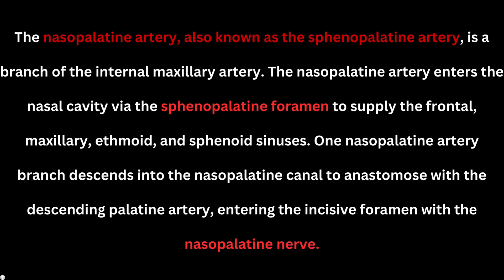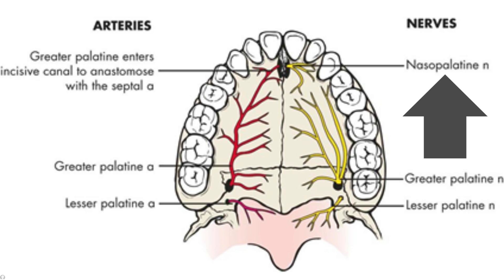The nasopalatine artery enters the nasal cavity via the sphenopalatine foramen — similar to the nasopalatine nerve — in order to supply the frontal, maxillary, ethmoidal, and sphenoidal sinuses, which are the paranasal sinuses. One branch of the nasopalatine artery descends into the nasopalatine canal to anastomose with the descending palatine artery, entering the incisive foramen together with the nasopalatine nerve. In simple terms, the nasopalatine artery enters the incisive foramen to join with the nasopalatine nerve.